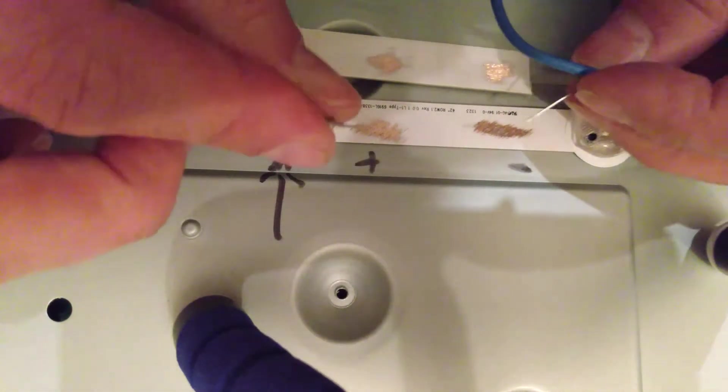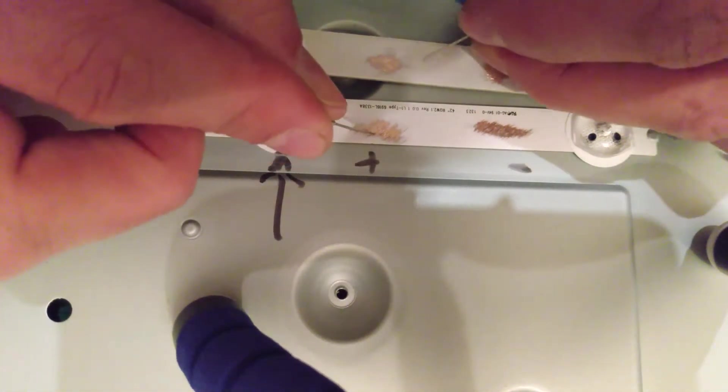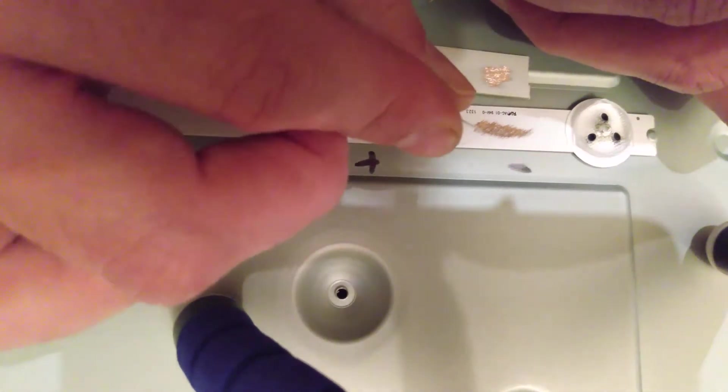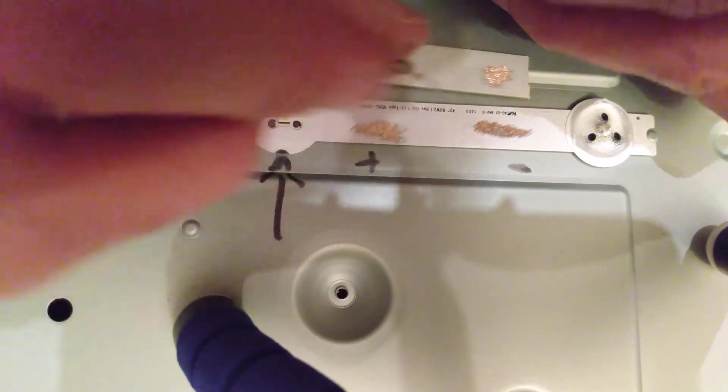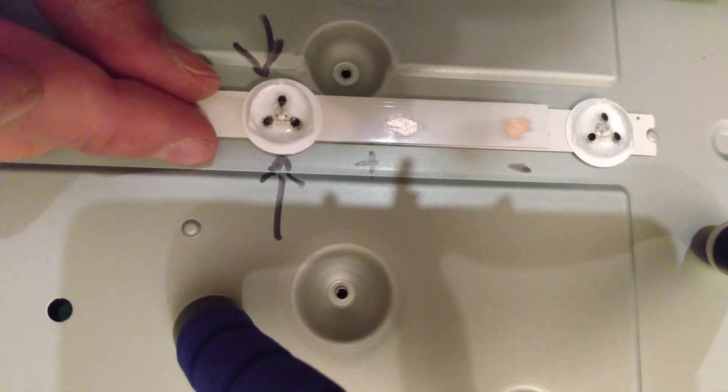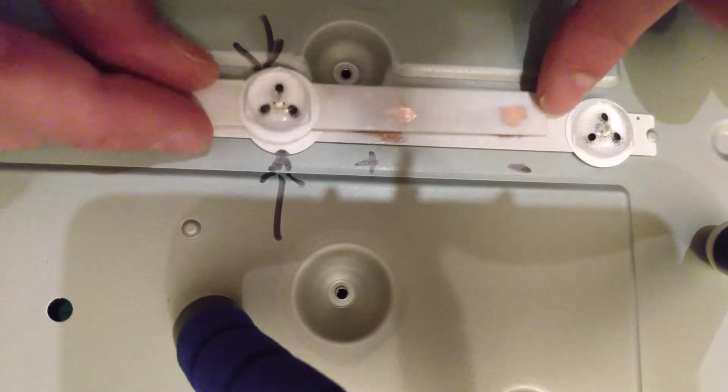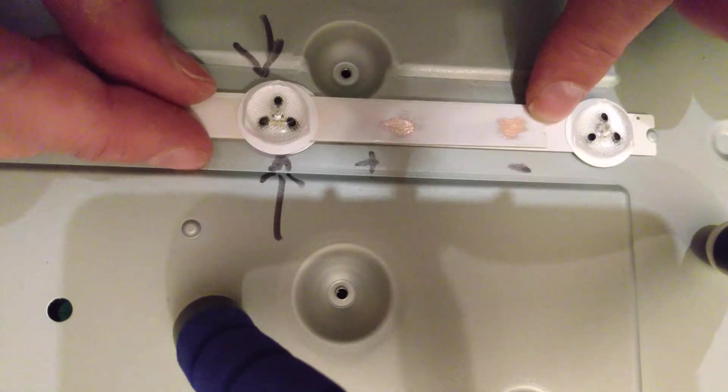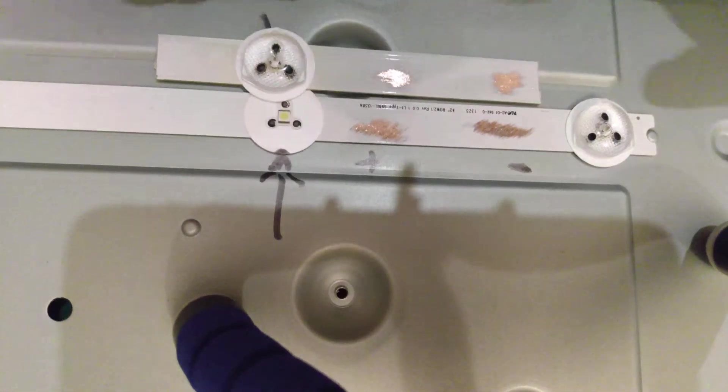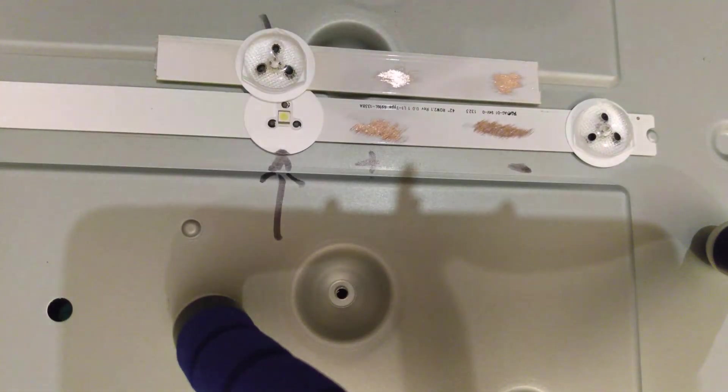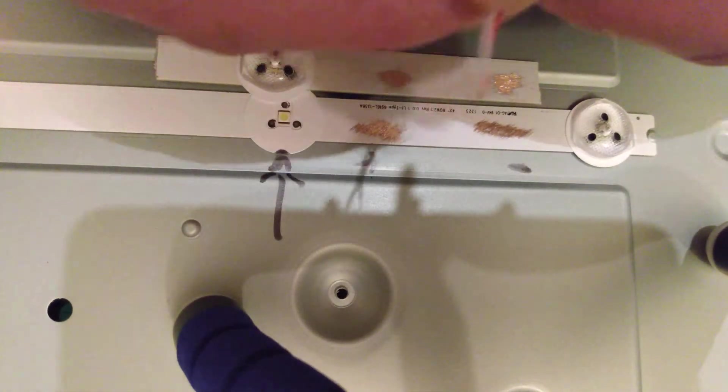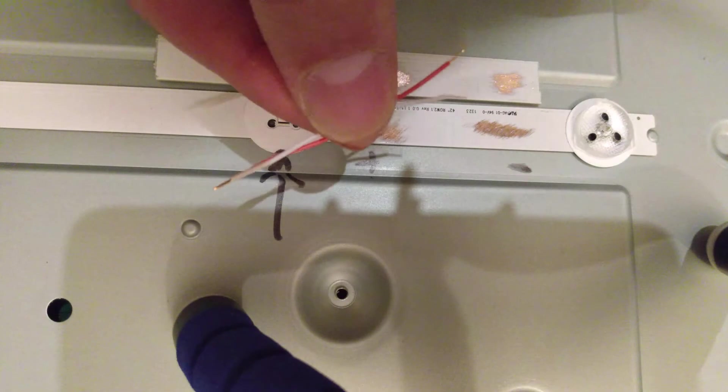The next job is to solder some wire to go from here to here, and then from there to there. Then basically tape that, or you can hot glue it. I'm just going to tape it over because it normally just does fine like that.